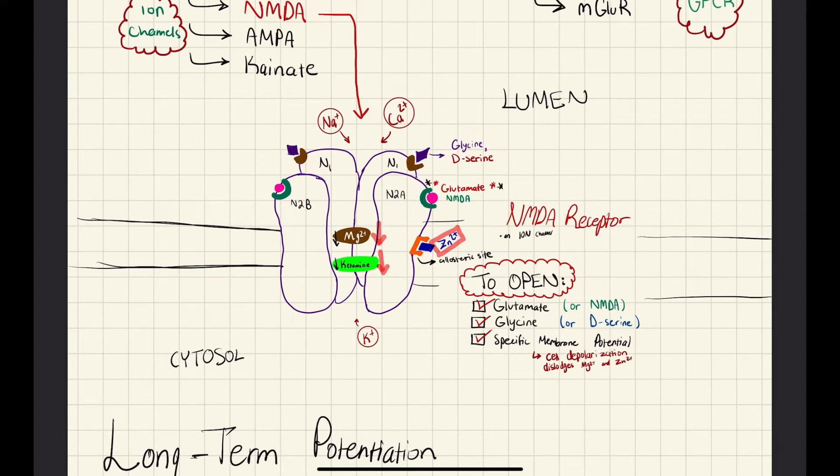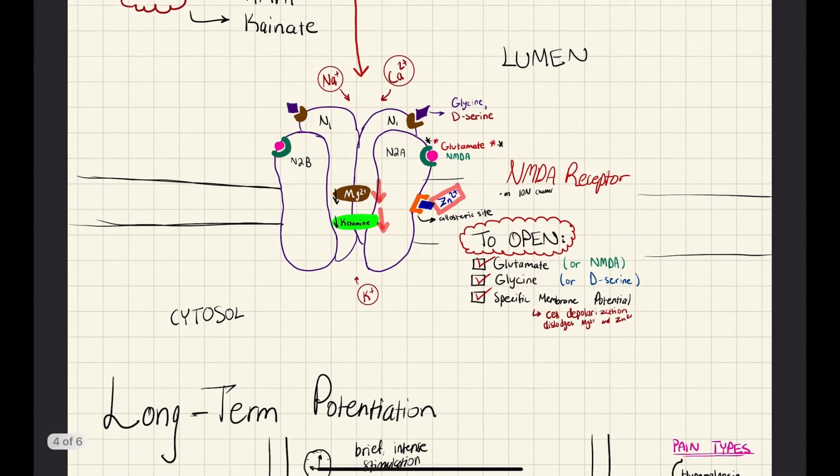But you can also bind NMDA, which is actually what it's named after. For the N2A, it has an allosteric site for zinc, which is an allosteric modulator. It negatively inhibits the channel from opening. And magnesium does the same. It blocks it. And ketamine, a compound you might be familiar with, actually blocks it as well.